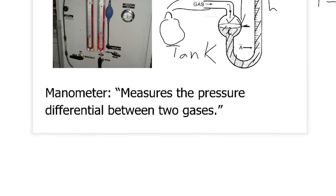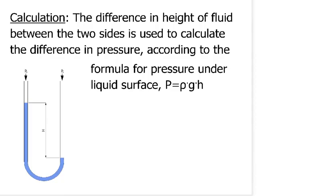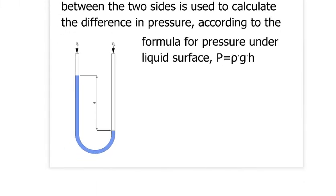That's the basic idea of a manometer — it measures the pressure differential between two gases. Here's a perhaps easier-to-see example: you've got one pressure there and a different pressure here. The difference in the height of the liquid gives you the pressure difference between the two gas pressures.